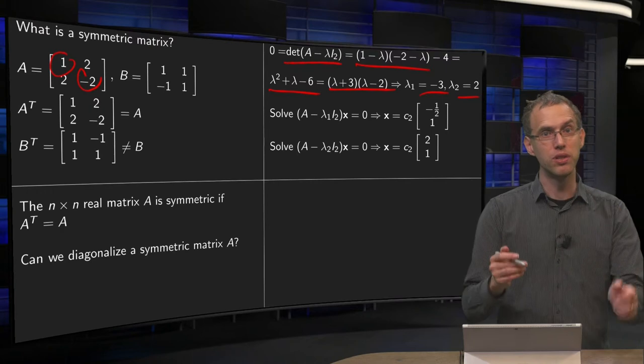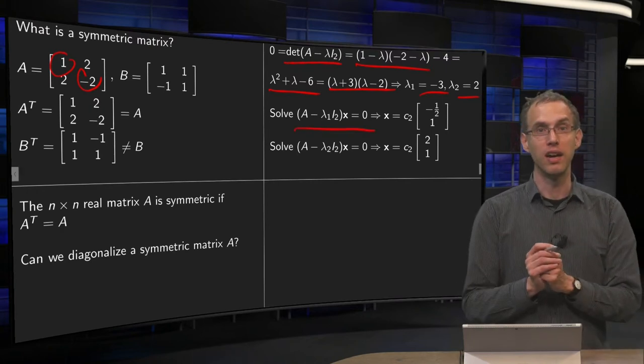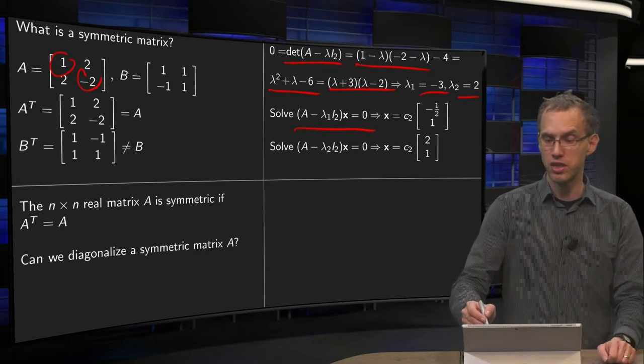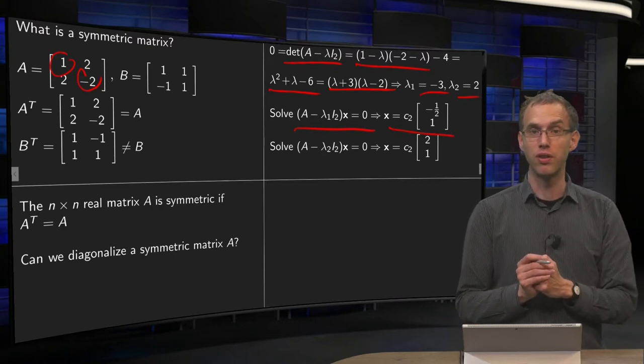Well, we have to compute the eigenvectors, so we solve A minus lambda times I times x equals 0. Skipping the computation, we get x equals the constant times minus 1 half 1,